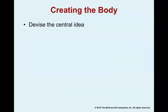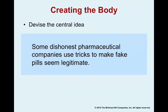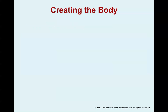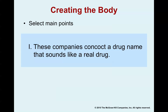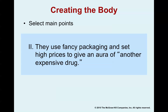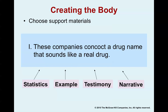First you start with that specific purpose, and then you come into the central idea. After you get that established, you need to go into your main points. For the purpose of our speech, our first point will be that these companies concoct a drug name that sounds like a real drug. And our second main point will be that they use fancy packaging and set high prices to give an aura of another expensive drug. These are going to be our two points. Once you get those points lined out, you go ahead and start choosing your support materials — you're looking for statistics, examples, testimonies, and narratives.